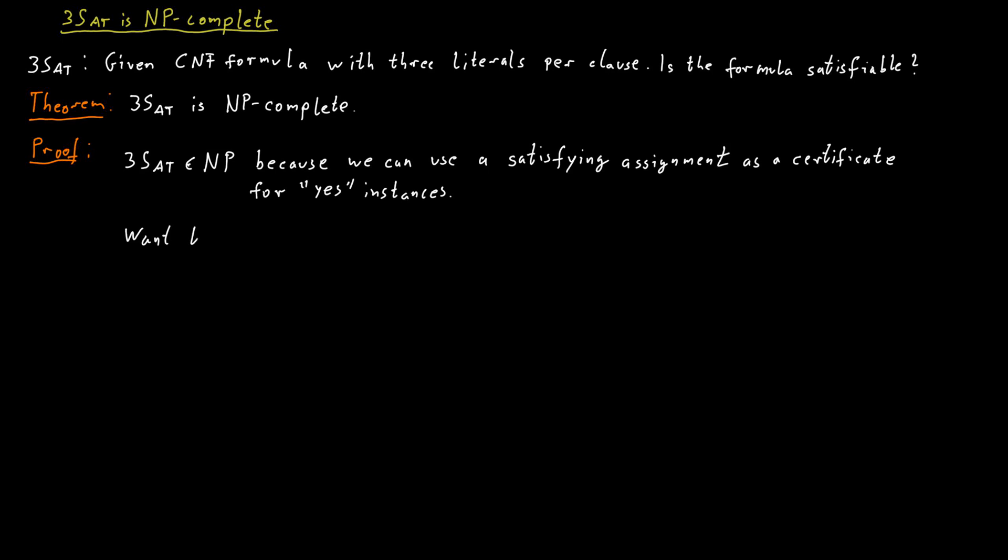So then we want to show that satisfiability polynomial time cup reduces to 3SAT. Let phi be any satisfiability formula, so any Boolean formula in CNF form. Now a difference between such a formula phi for satisfiability and a formula for 3SAT is of course that a clause might not have exactly three literals in it. It might have more literals or fewer literals.